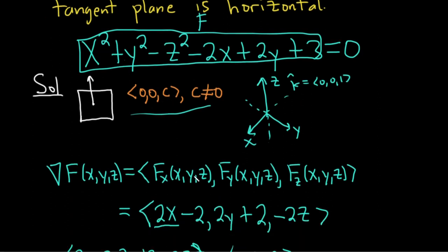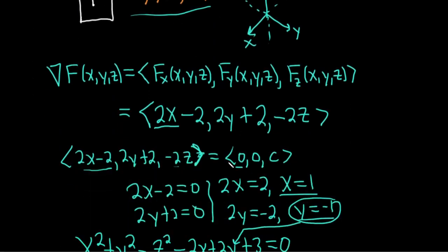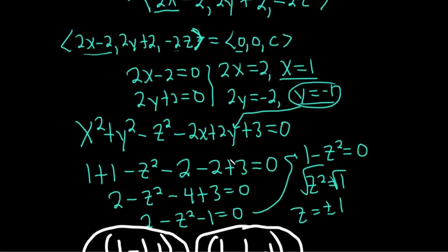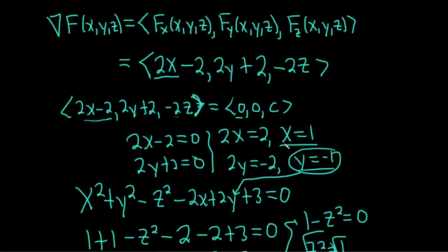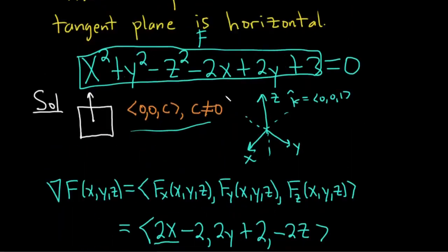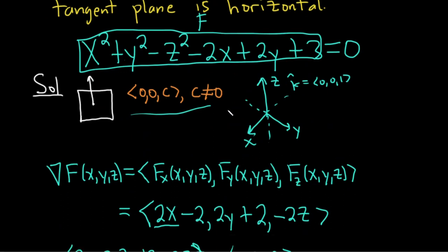At the same time, the gradient also gives you a normal vector for your tangent plane. So you set them equal and then try to figure out what x and y are. And then to find z, you just take your numbers and you plug them back into your original equation for your surface. And that's how you get the z coordinate for the points where your tangent plane is horizontal.